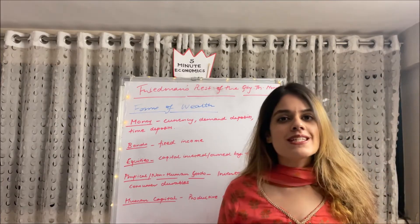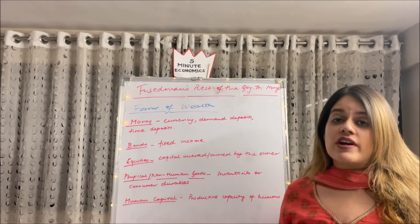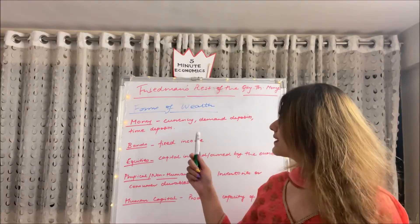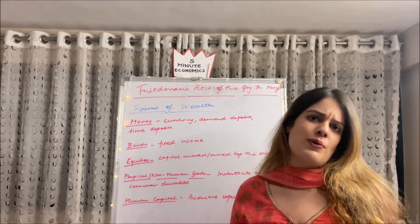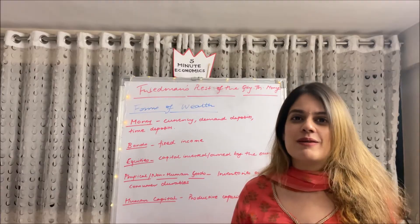Number one, easiest, simplest: money. Money is a very important form of wealth. Money can be held in currency, demand deposits, time deposits. However I am sure you know about it so I am not going in the depth of it.